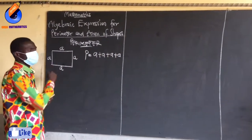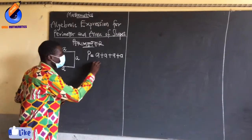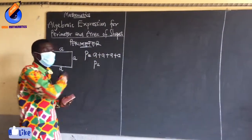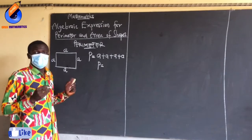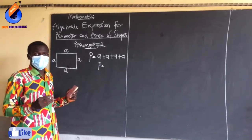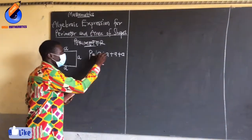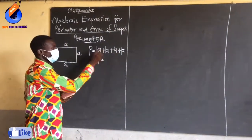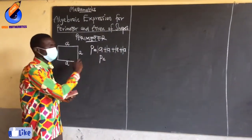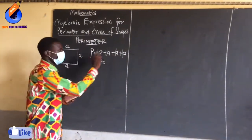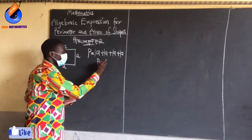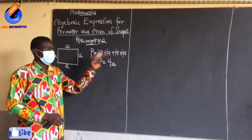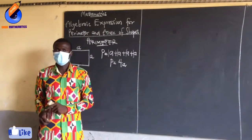The distance around it. Last week we were dealing with algebraic expressions. There is one A here, one here, one here, one here. One plus one is two, two plus one is three, three plus one gives me four. So the perimeter for this shape is 4A.